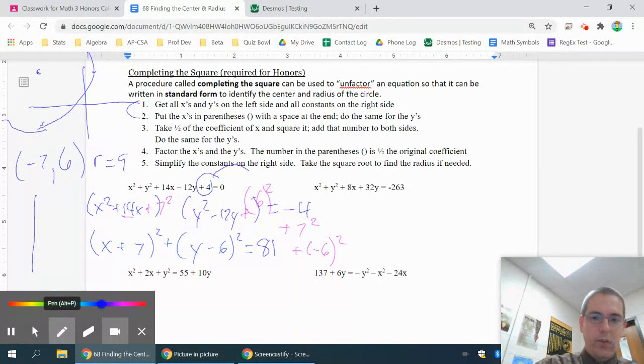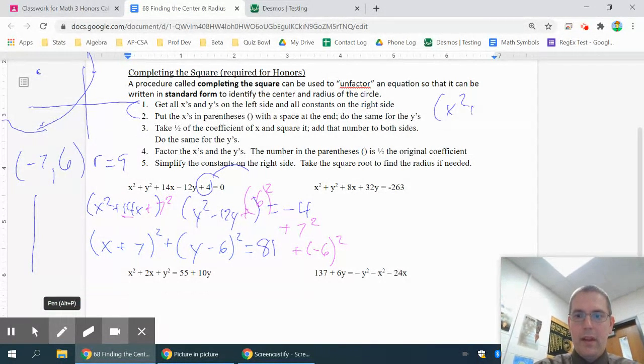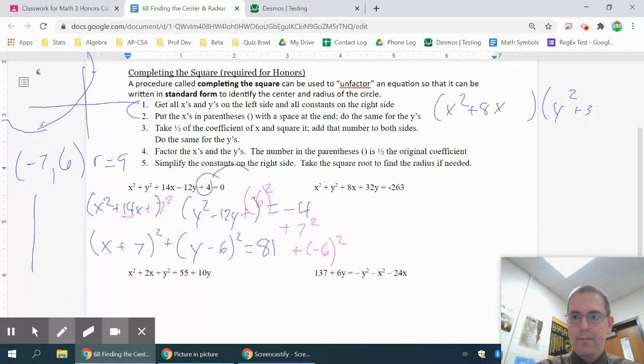So the next one, what I can do is I can group them together. So that's going to be an x squared plus 8x and then a y squared plus 32y. And I'm about to run out of room, but that should equal negative 263. Well, I am totally running out of room. I'm just going to write that down there, I guess, negative 263.